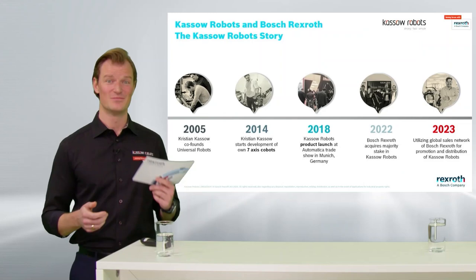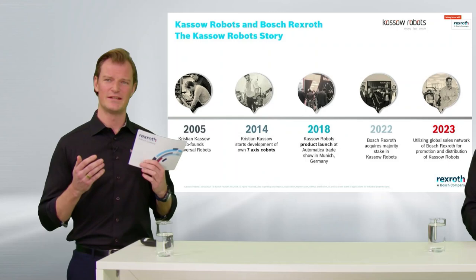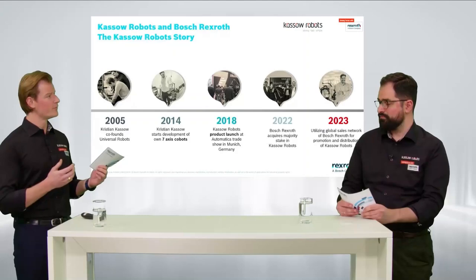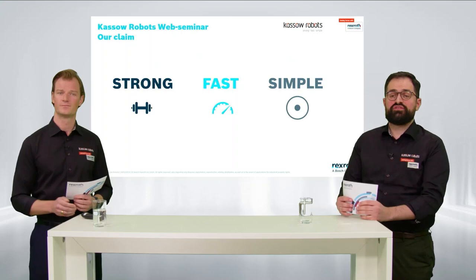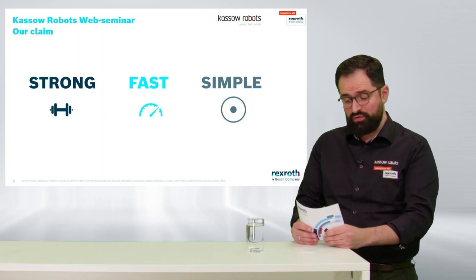To give a better feeling of the robot and the company itself, let's talk about our three claims: strong, fast, and simple. Starting with 'strong': our joints can hold up to 236 Nm, which is very strong. The robot is completely built of aluminum, ensuring a robust build. And the high payload-to-reach ratio, together with a small footprint, makes it a very good fit.